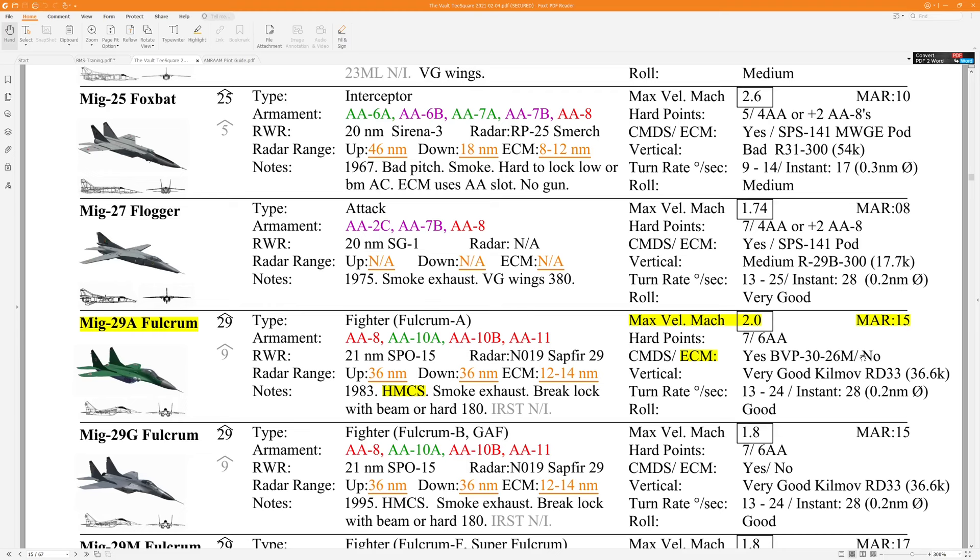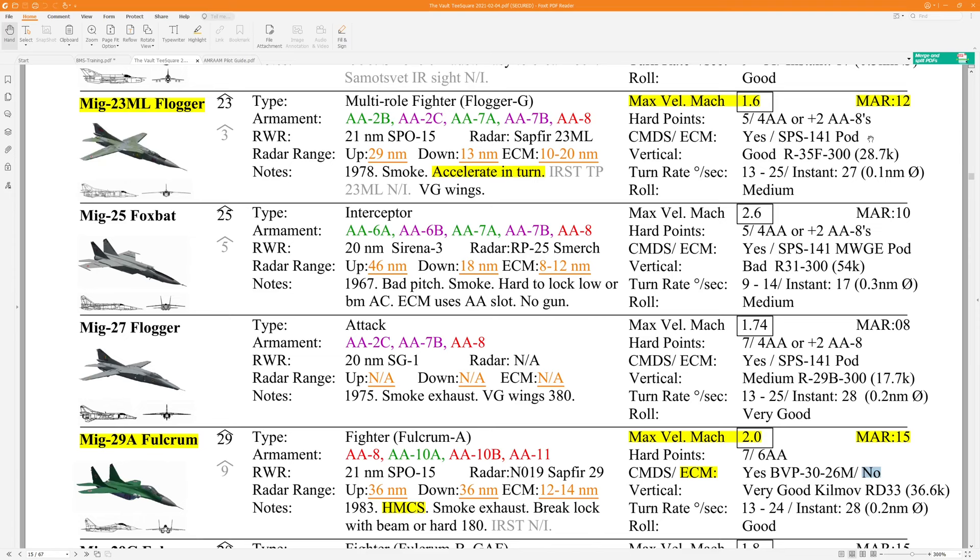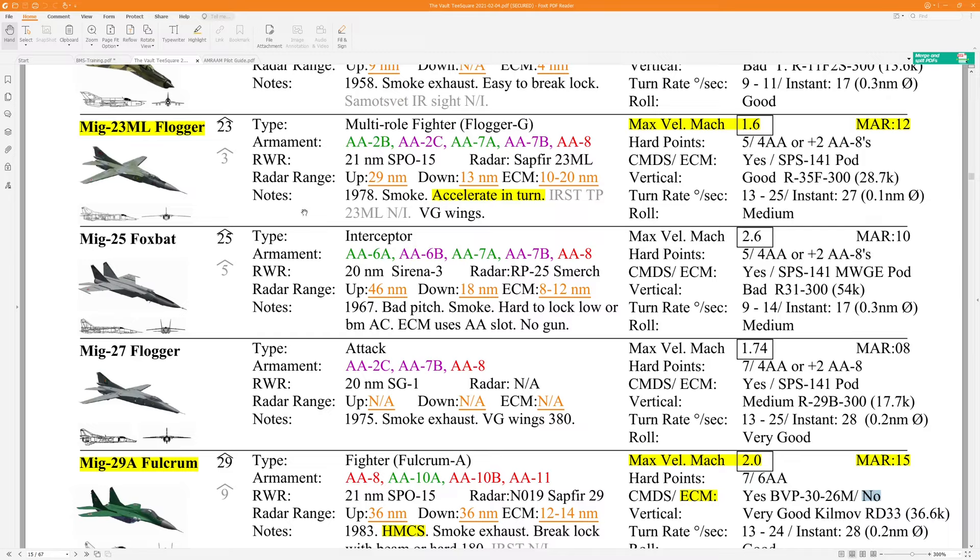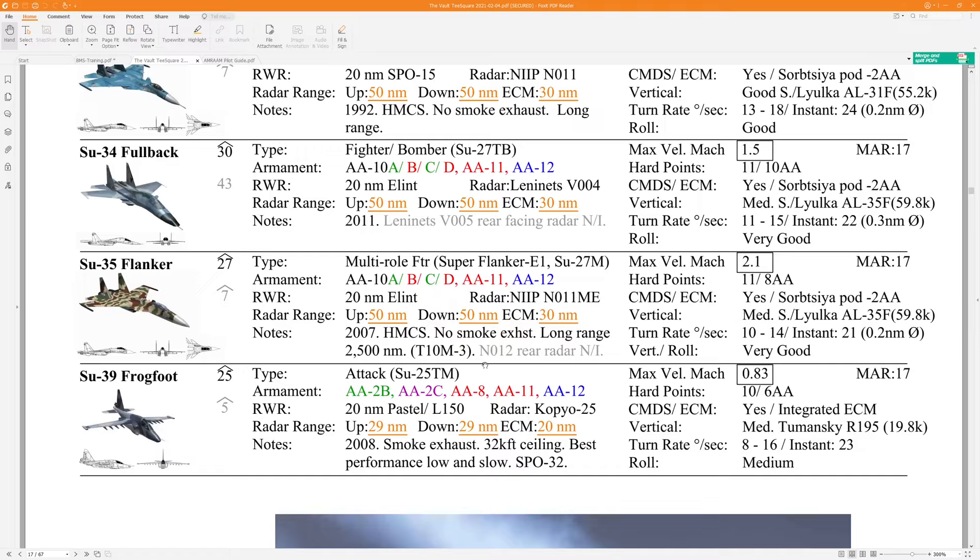Lots of other useful information about them. For instance, MiG-29 Alphas don't have a jammer. MiG-23 Mike Limas can carry some sort of electronic countermeasure pod. But lots of good information here. Accelerate in a turn. These guys are very fast. Let's take a look at the missiles that these guys carry, which also factor into the WEZ-TA and the MAR.